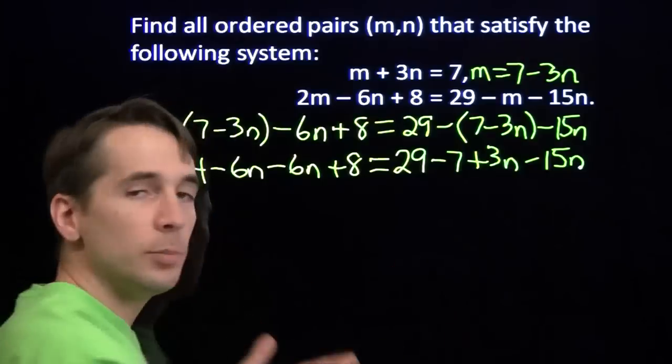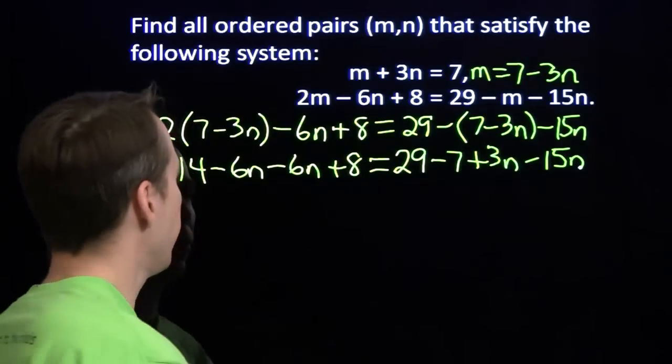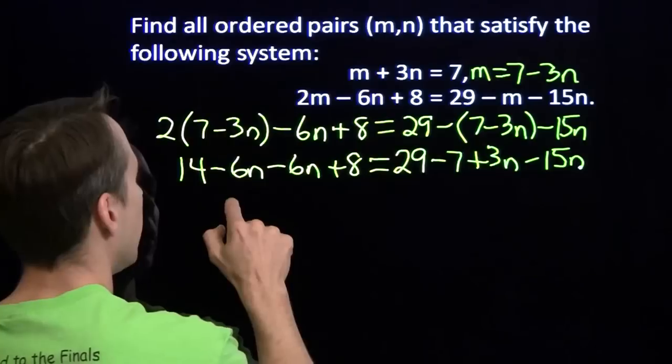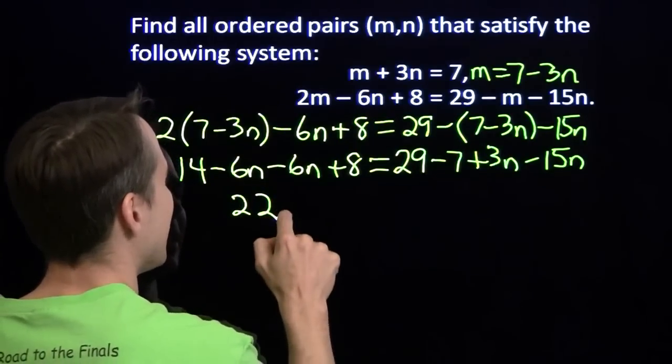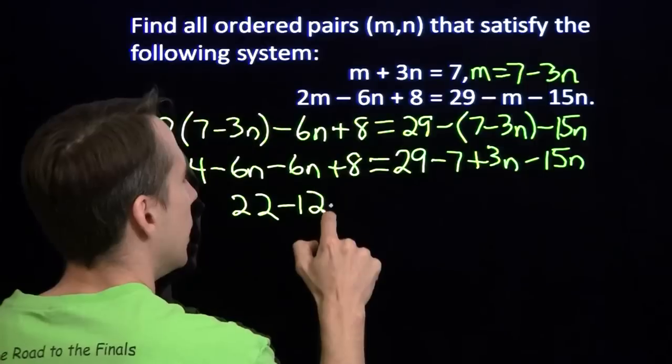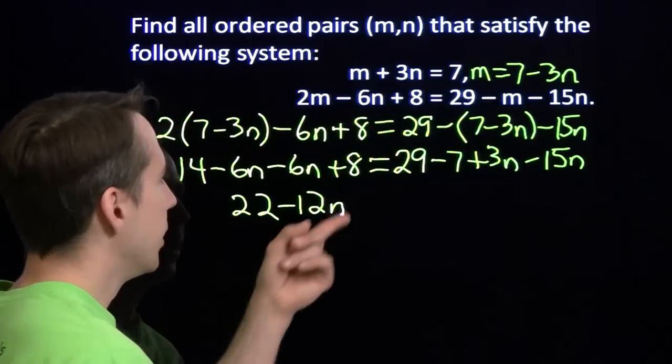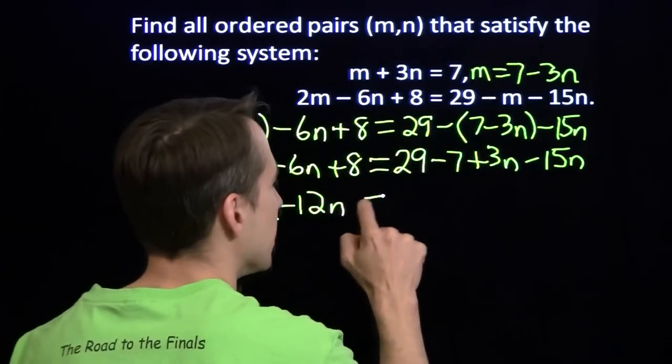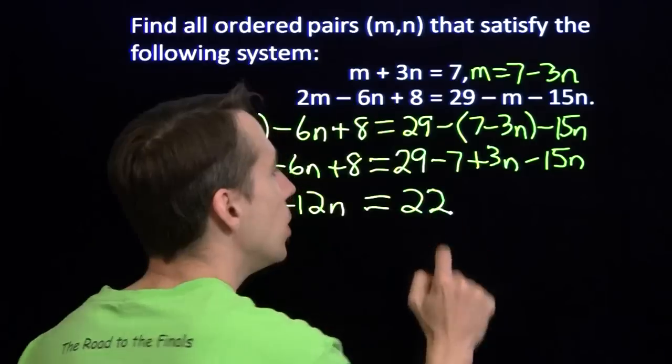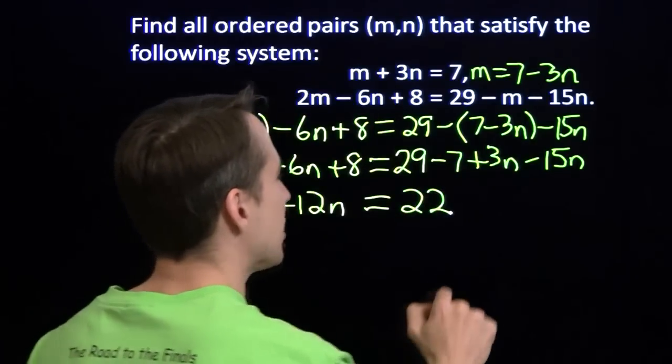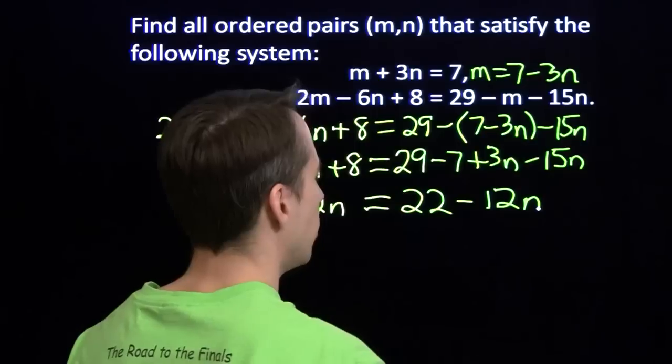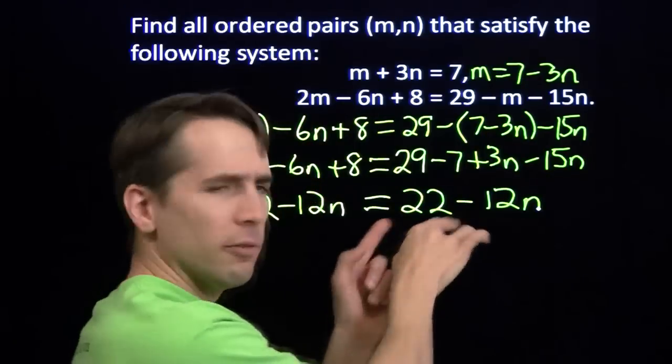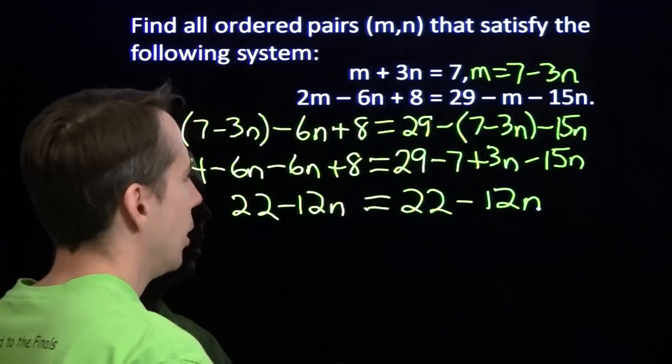Now we have a simple linear equation. We know how to handle this. Over here on the left, 14 and 8 gives us 22, minus 6n minus 6n is minus 12n. Over there, 29 minus 7 is 22 plus 3n minus 15n is minus 12n. I've got a little deja vu with that expression over there.